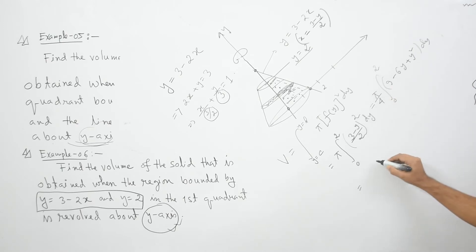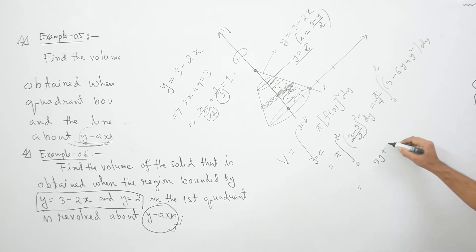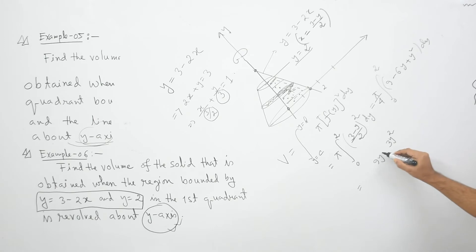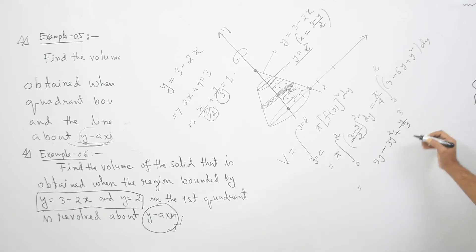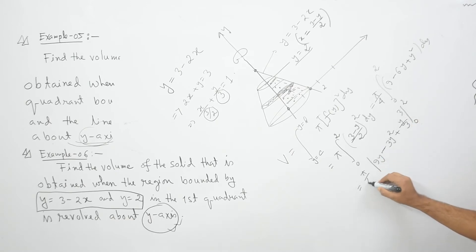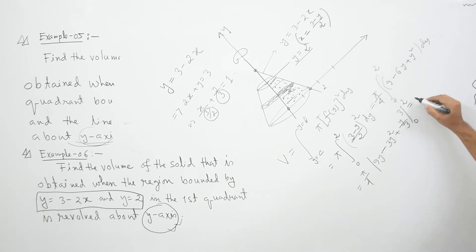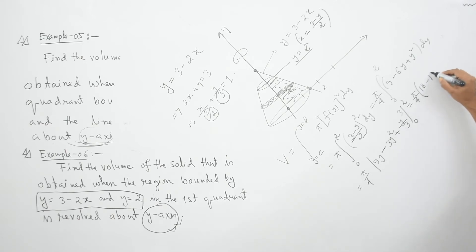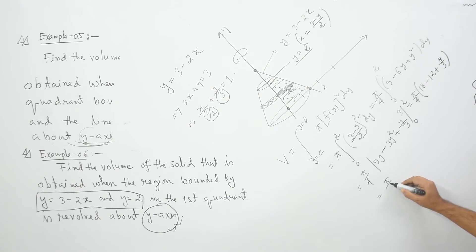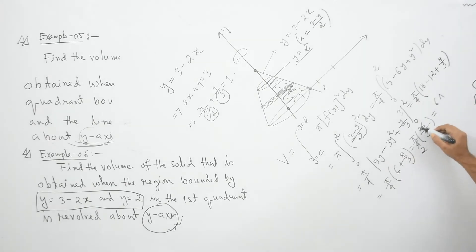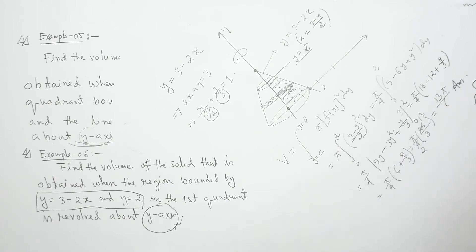Integration gives π/4 times [9y minus 3y² plus y³/3] from 0 to 2. Substituting the upper limit 2: we get 18 minus 12 plus 8/3, which is 6 plus 8/3. This gives 5π/6 approximately, so 5π/6 is the volume of this solid material.